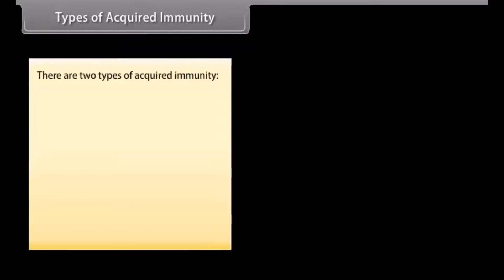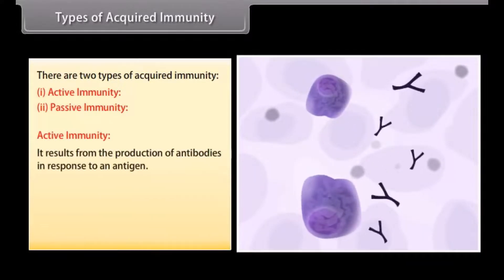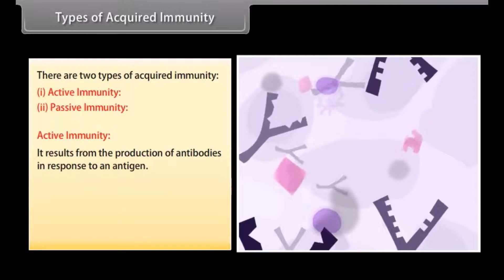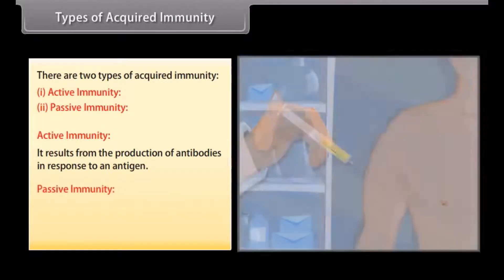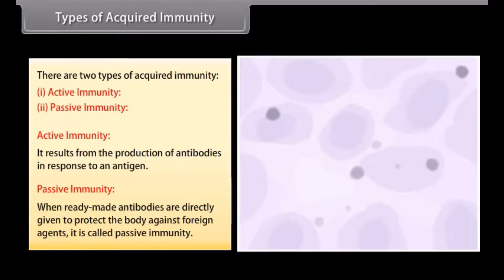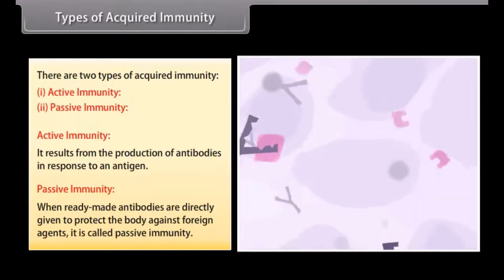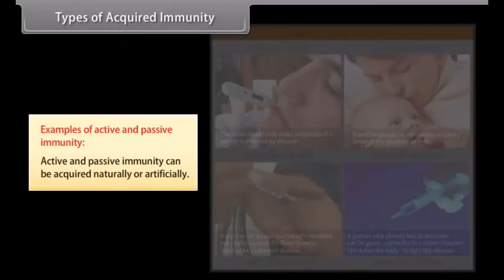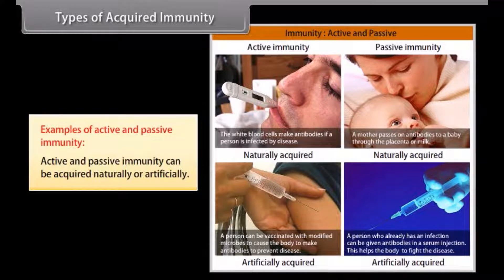There are two types of acquired immunity: active immunity and passive immunity. Active immunity results from the production of antibodies in response to an antigen. Passive immunity is when ready-made antibodies are directly given to protect the body against foreign agents. Active and passive immunity can be acquired naturally or artificially.